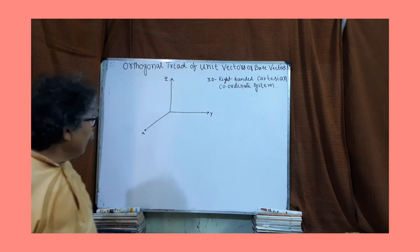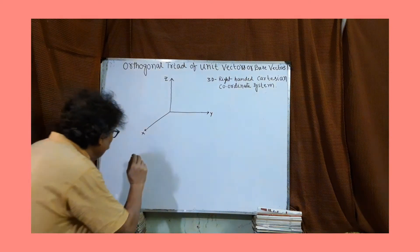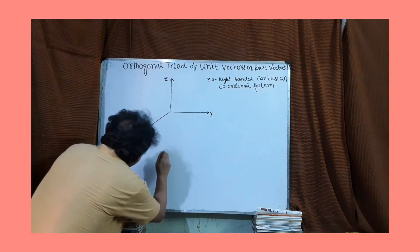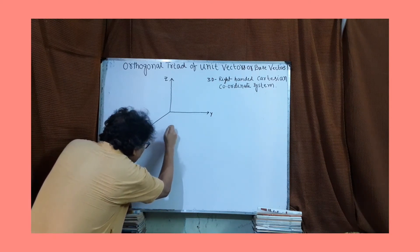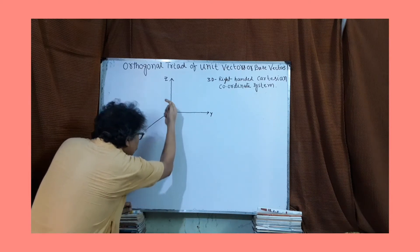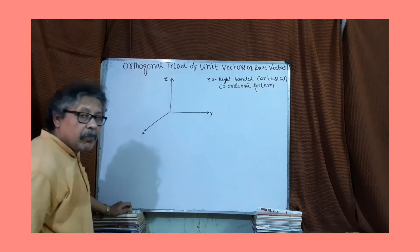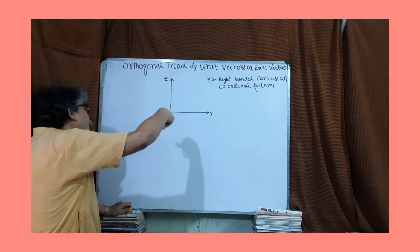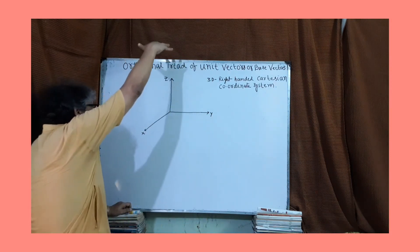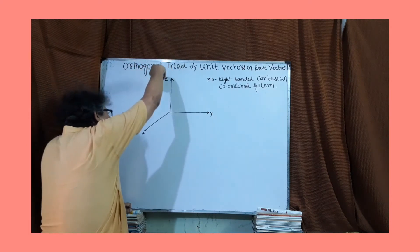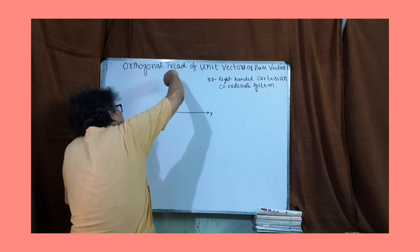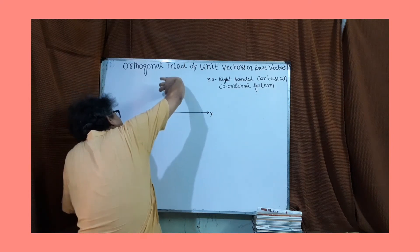Or you can also consider in this way - if you look from below, you rotate a right-handed screw from x-axis to y-axis. Look this. Then the screw is advancing, tip of the screw advancing in this direction. It will be in that direction, z-axis.